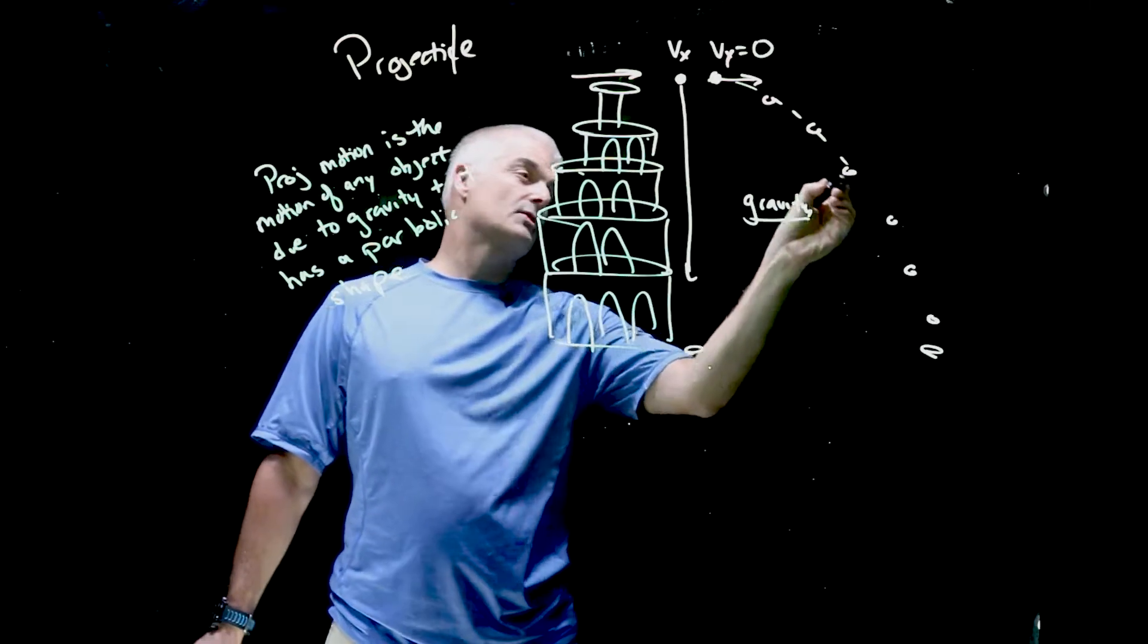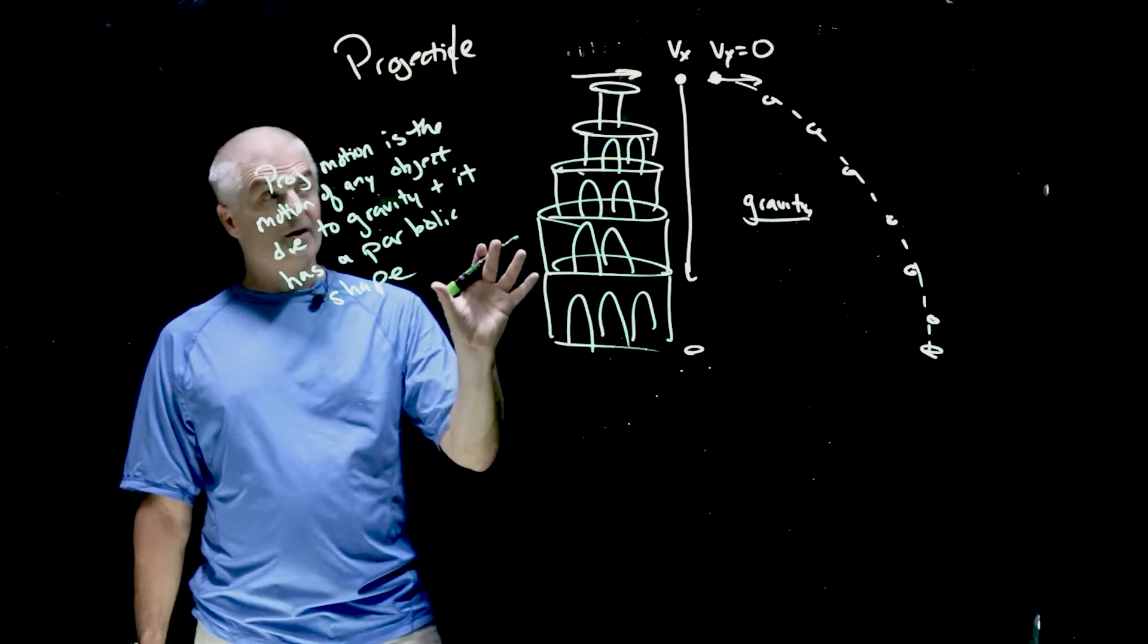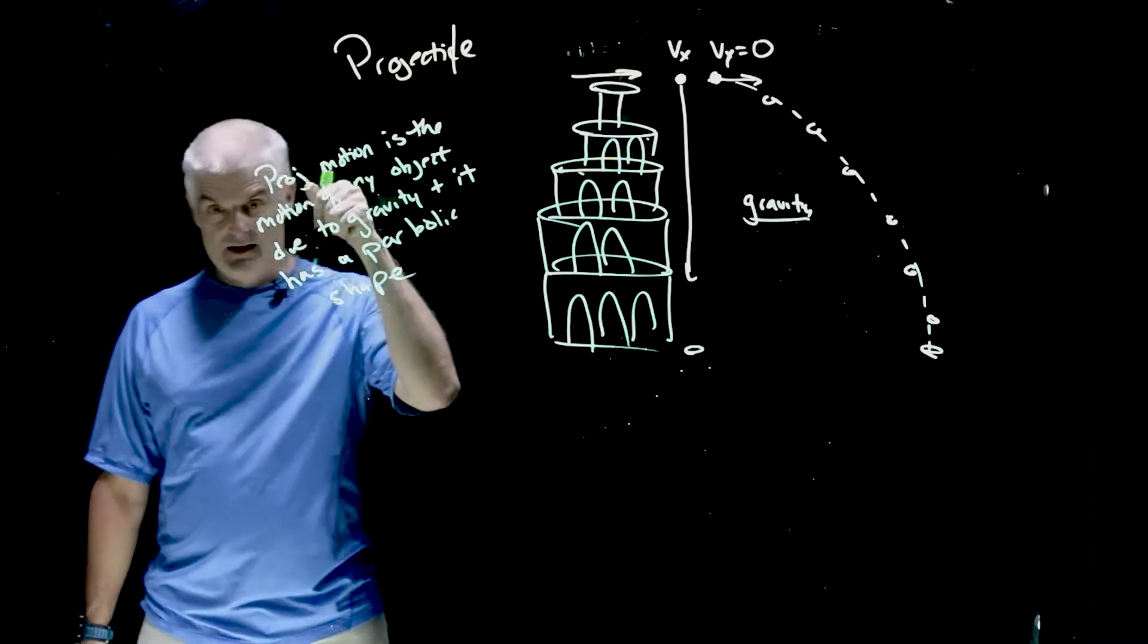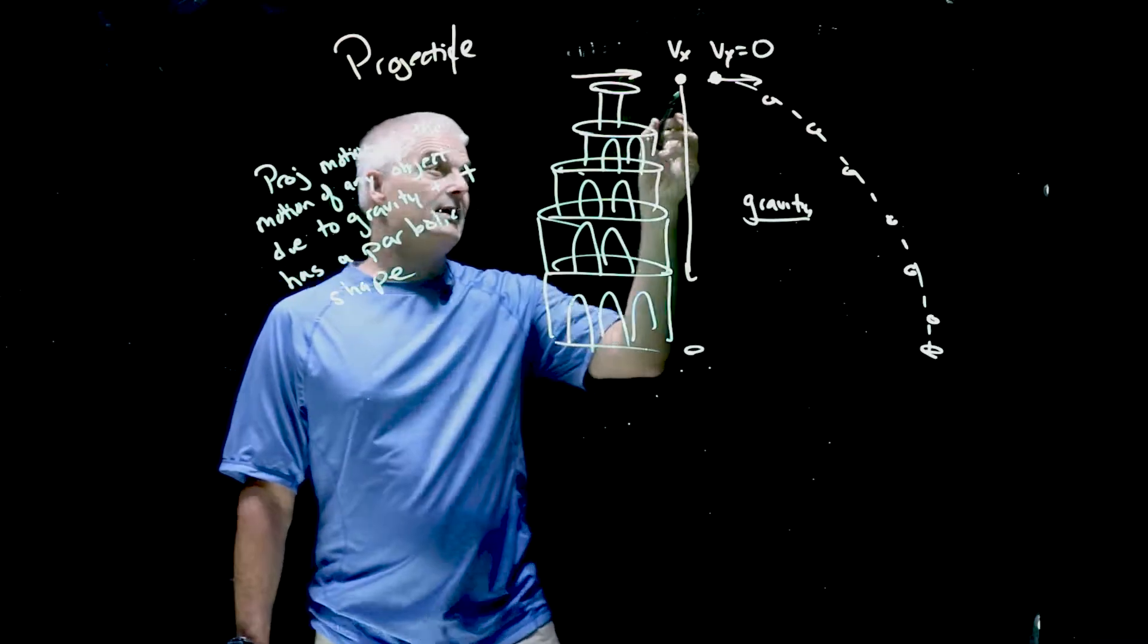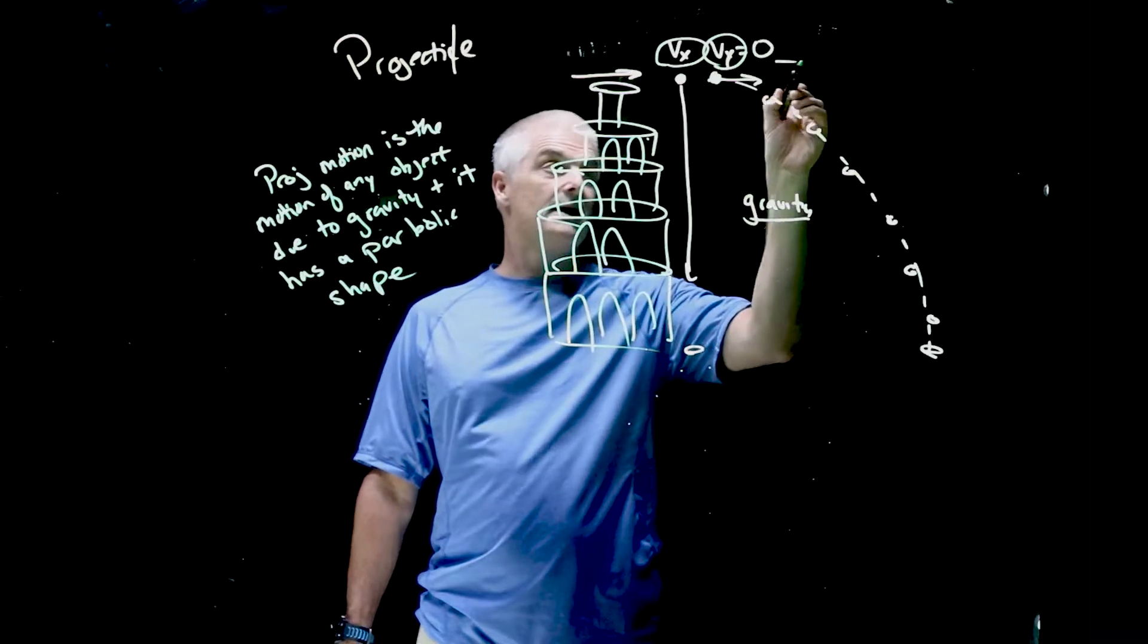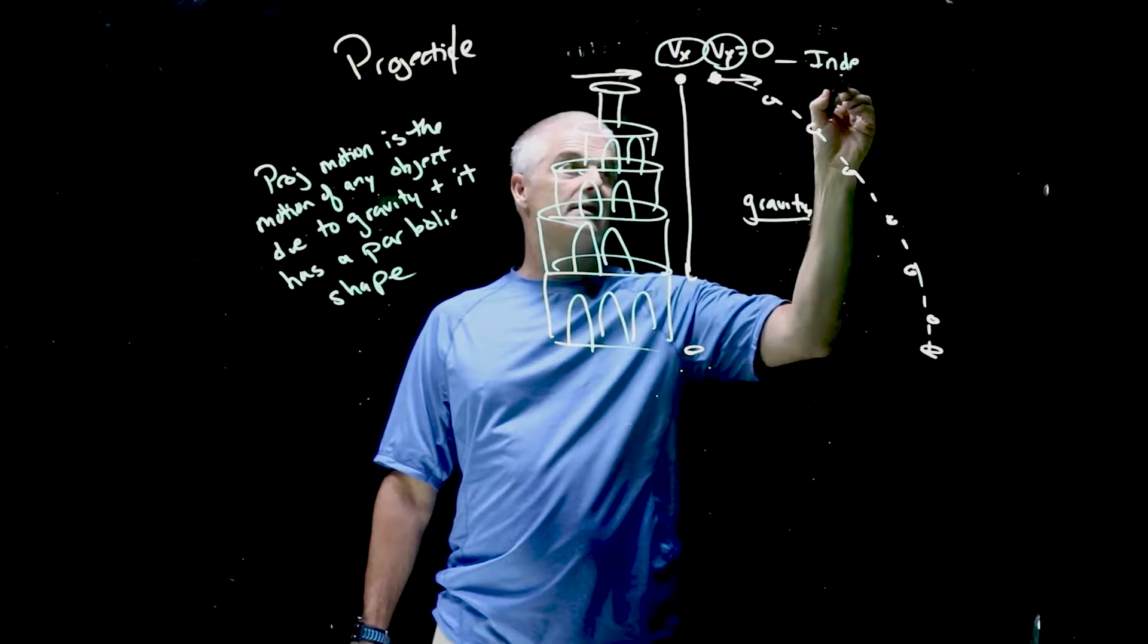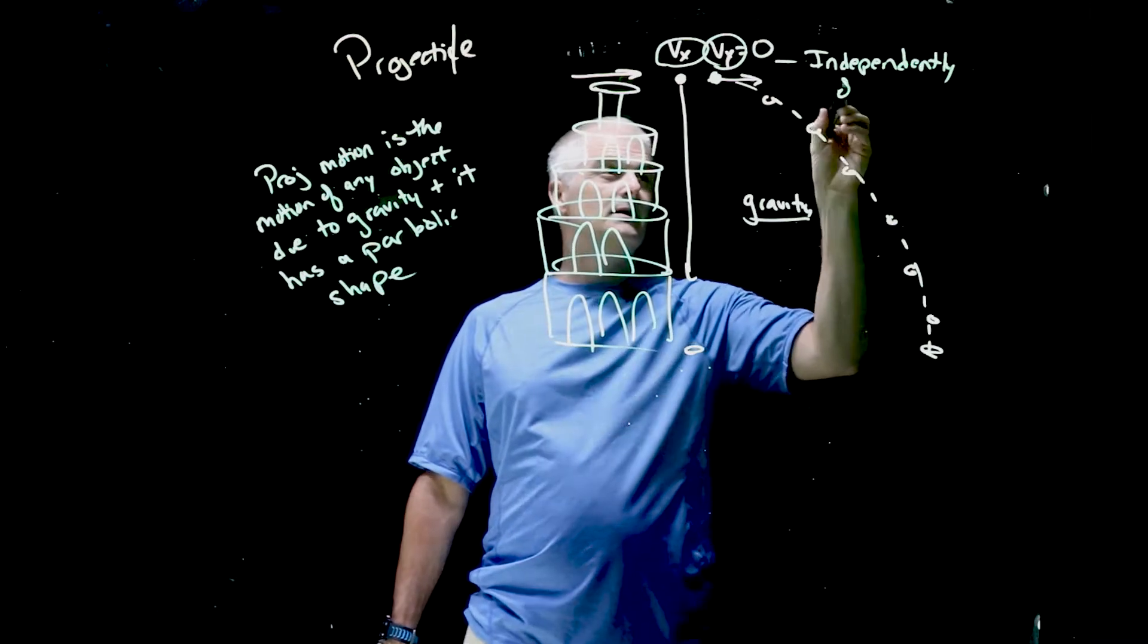So if we were to make this a graph, it's going to look like a parabola. The other thing to make a note of is that the downward force - the VX and the VY - they act independently of each other.